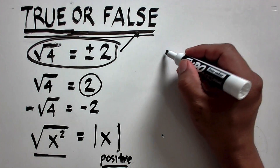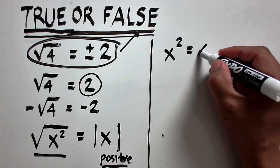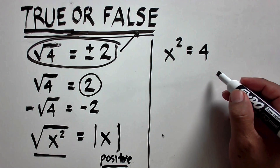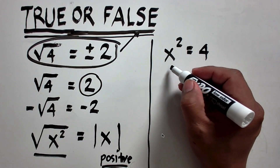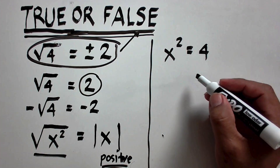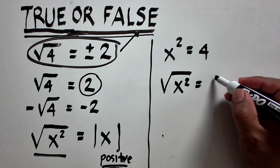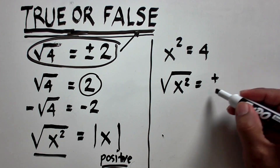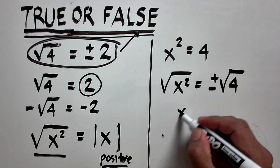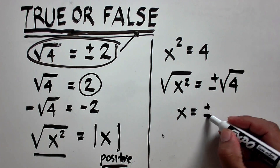It is different if you have an equation. Let's say you have x squared is equal to 4. This time, you are not computing for the value of the expression. You are looking for the value of x that will satisfy this equation. And that is the case when you take the square root of both sides, and then on the right side you have plus or minus the square root of 4. So you have x is equal to plus or minus 2.